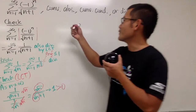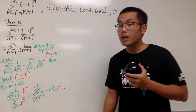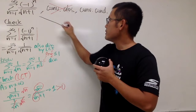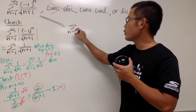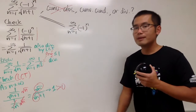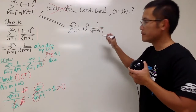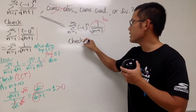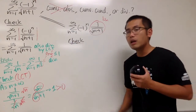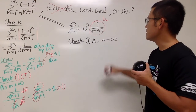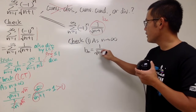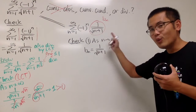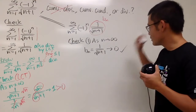So absolute convergence is ruled out. But we still have to check if the original series with (-1)^n converges. We rewrite it as the sum as n goes from 1 to infinity of (-1)^n times 1/√(n+1). Here b_n = 1/√(n+1). First check for the alternating series test: the limit as n→∞ of b_n = 1/√(n+1). Putting infinity in — infinity plus 1 is infinity, square root of infinity is infinity, 1/∞ = 0. It checks.